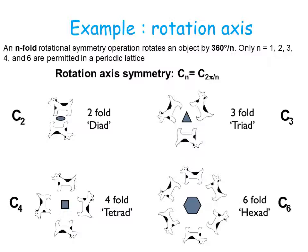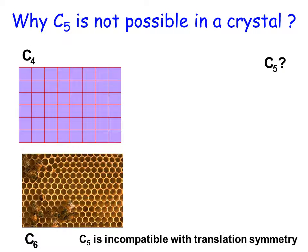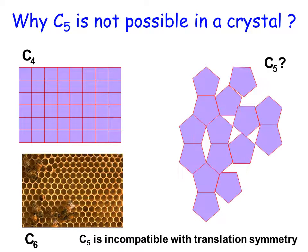A five-fold rotation axis is not allowed because it is incompatible with translation symmetry. A crystalline structure with four- and six-fold rotation axes allows the complete filling of space by reproducing the unit cells. In the case of a pentagonal symmetry axis, it is incompatible with translation symmetry — you cannot fill space without leaving empty gaps, and therefore you cannot produce a crystal.